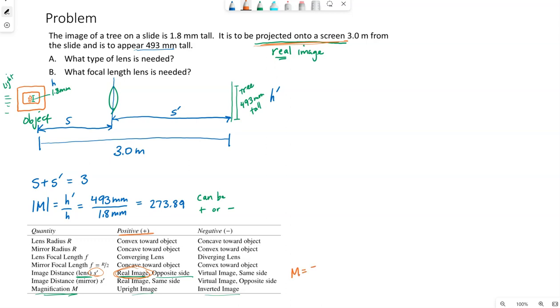That means S prime is positive. So when we think of the equation for magnification, if S prime is positive, but the equation has a negative sign in it, we will get a negative answer for magnification. Real images, if you draw yourself a nice little ray diagram, any time we ended up with real images, they were always inverted. So magnification is negative. So for this problem, we can say magnification is negative 273.89.